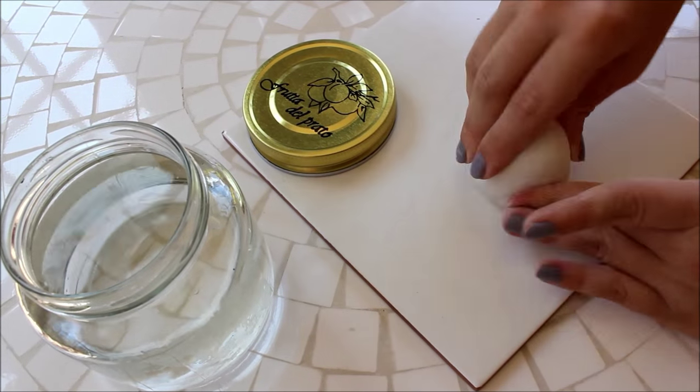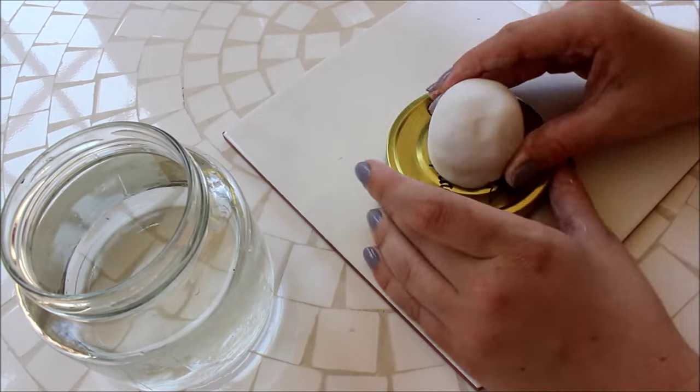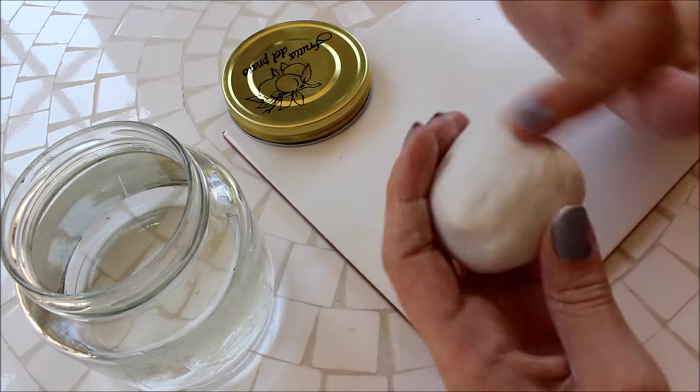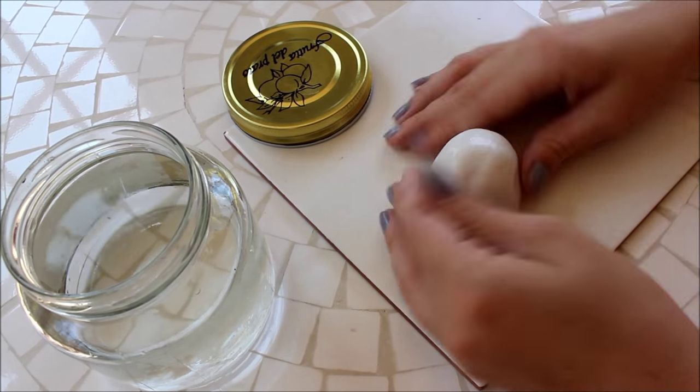Start by making your Pusheen out of the paper clay. Keep the lid close by to ensure your Pusheen will not be too big or too small for your jar. The Pusheen is basically just going to be a rounded lump of clay until you add the ears and arms.